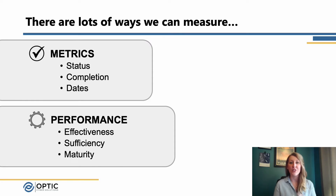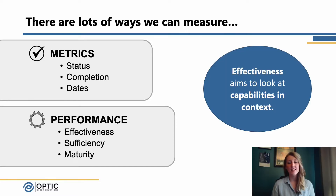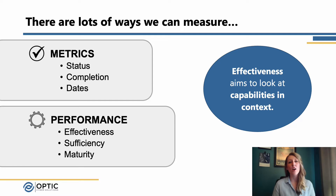Technically we have a camera in place, but it's not effective — it's not really being used. Or the gate that's out in the middle of the road but there's no fencing, so everybody's just driving around the gate. While technically it's in place, once again, it's not effective. This is why it's really important to understand what we're trying to measure and what kind of measurements we want to use — whether we simply want to look at metrics to understand if something is in place, or look at the performance and sufficiency of the capabilities we have.